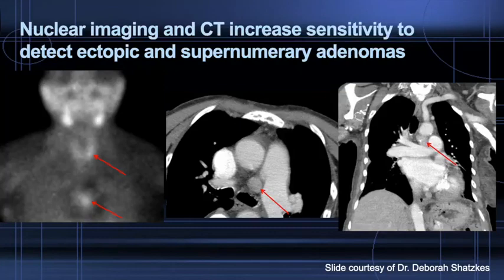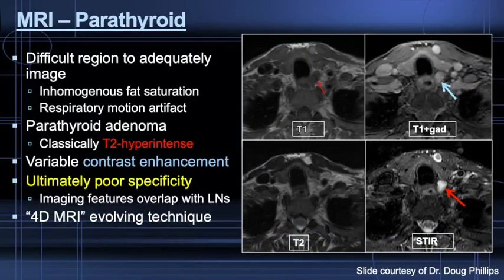Perhaps the most crucial advantage of nuclear imaging is detection of ectopic adenomas in the mediastinum and detection of unexpected supernumerary disease. On CT, it may be impossible to differentiate mediastinal lymph nodes from adenomas. This case depicts a pretracheal ectopic parathyroid adenoma. There is limited utility for MRI in evaluating parathyroid gland disease, though it is an evolving technique. Parathyroid adenomas are certainly visible when large — quite T2 hyperintense with avid contrast enhancement — and incidental parathyroid adenomas may be encountered on neck MRI.